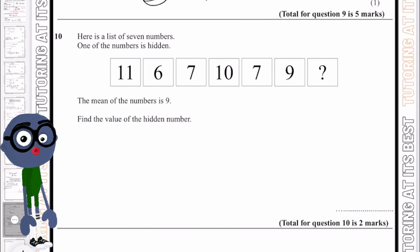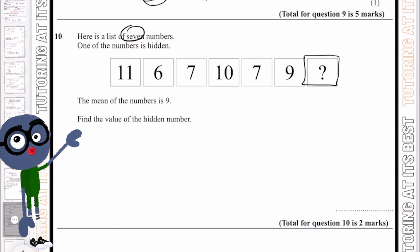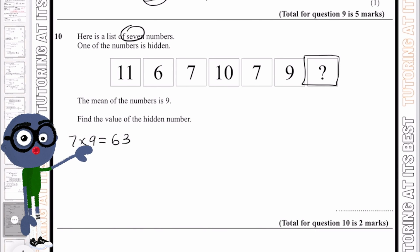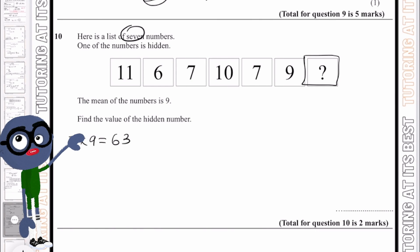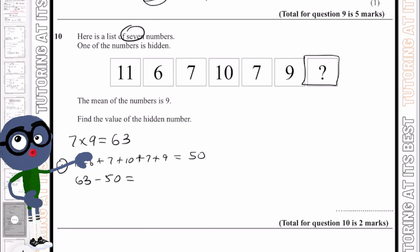Question ten: we have seven numbers with one hidden, and the mean is 9. Multiplying 9 by 7 gives a total of 63. Adding up the known numbers gives 50, so 63 minus 50 equals 13. The hidden number is 13.